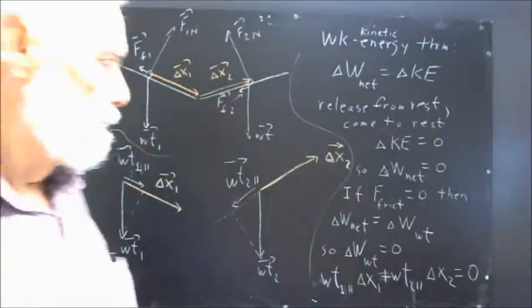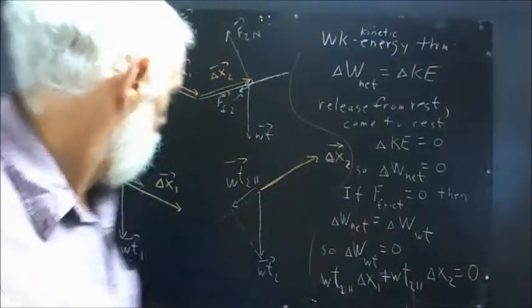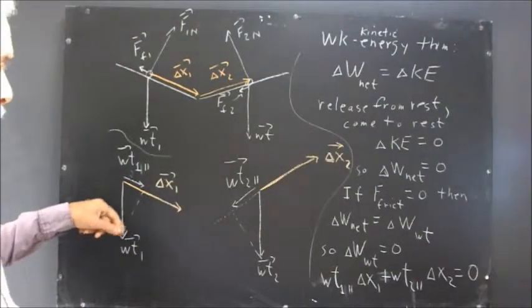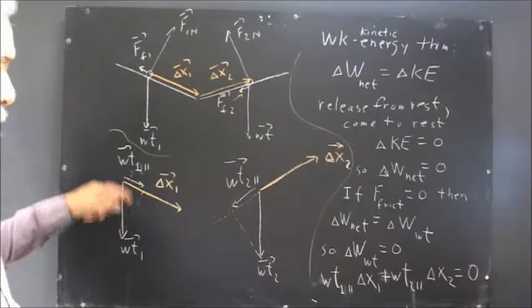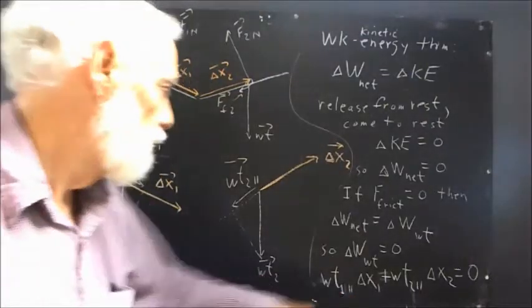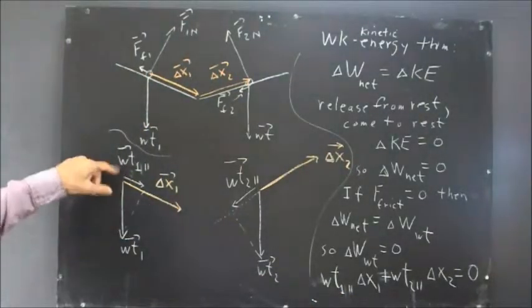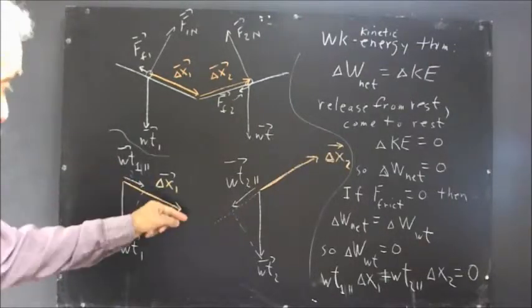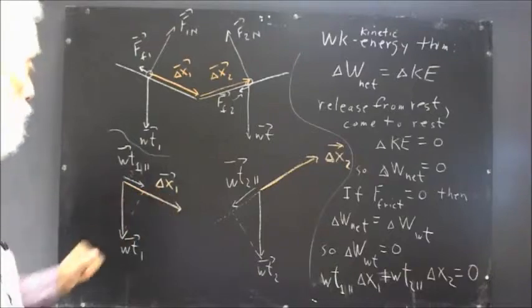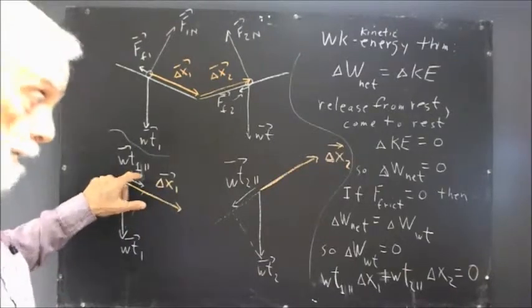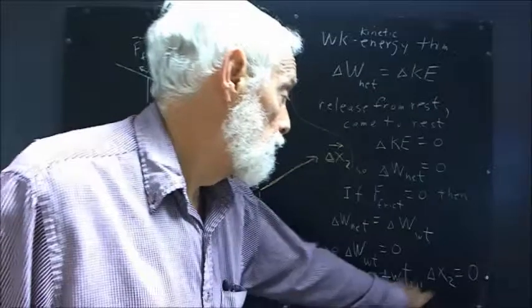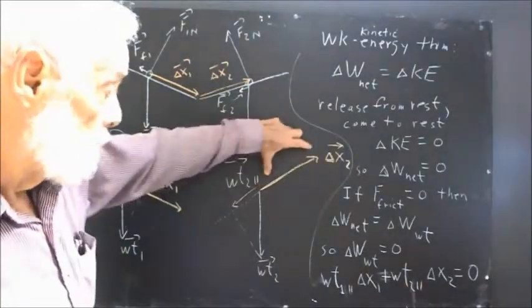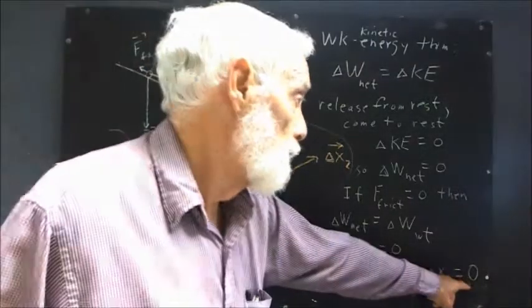And we come to the conclusion that the weight one parallel, the projection of the full weight vector on the displacement vector, the parallel component of that weight vector, times delta x1, plus the same calculation for the second ramp, this projection times delta x2, has to equal zero.